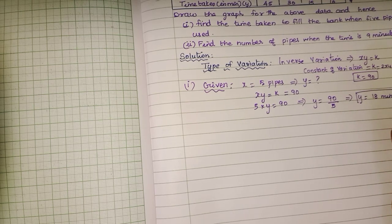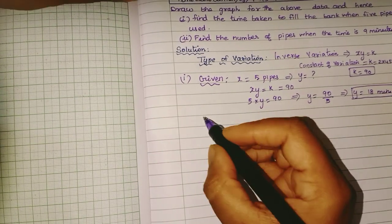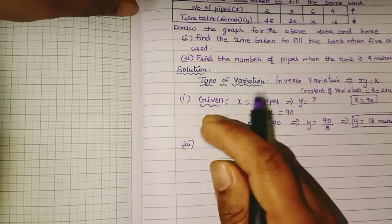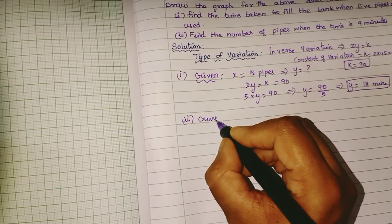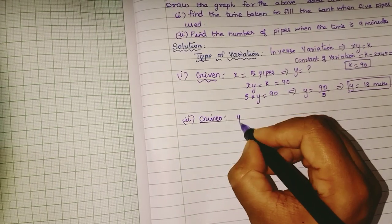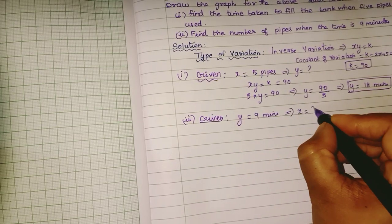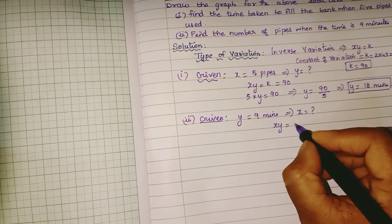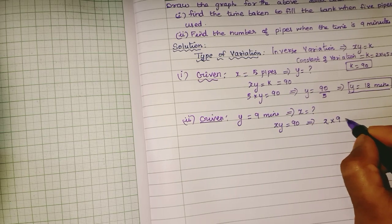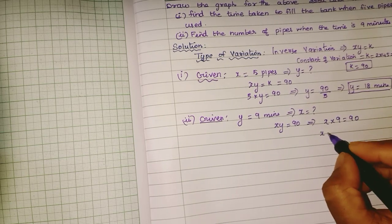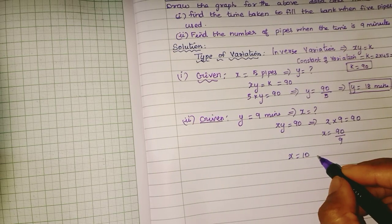So the answer is 18 minutes. Now the second question: find the number of pipes when the time is 9 minutes. Time taken is given as 9 minutes. So x × 9 = 90, therefore x = 90 ÷ 9, so x is equal to 10 pipes.